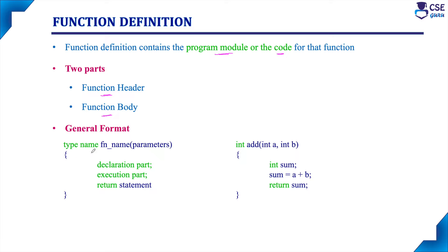The general format consists of a data type name and then the function name. The function name is like an identifier — any name can be given without spaces. The rules to follow are the same as for identifiers: any name can be given, but we should not use keywords. Within parentheses, we need to specify the parameter list. If there is more than one parameter, they should be separated by a comma. This is the body of the function.